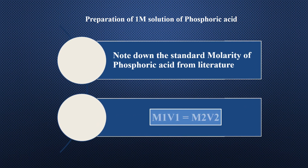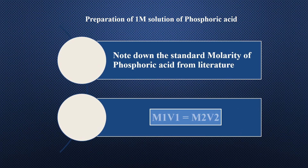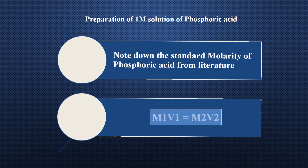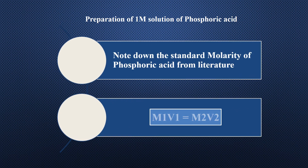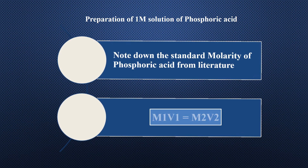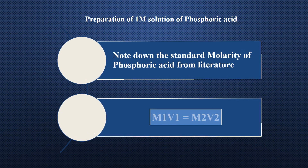V1 is the volume which will be taken out from the acid's bottle. M2 is the molarity which we want to prepare — in this case we want to prepare a 1 molar solution. V2 is the required final volume of solution, which can be 100 milliliters, 200 milliliters, 250 milliliters, 500 milliliters, or 1000 milliliters, according to the volume required.